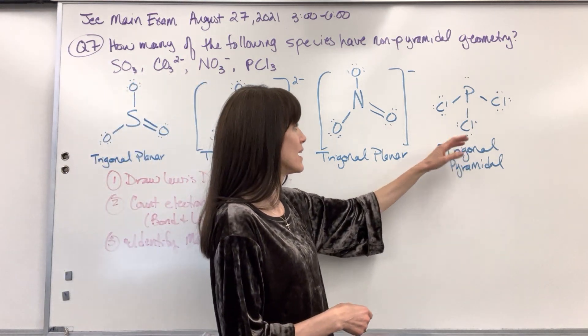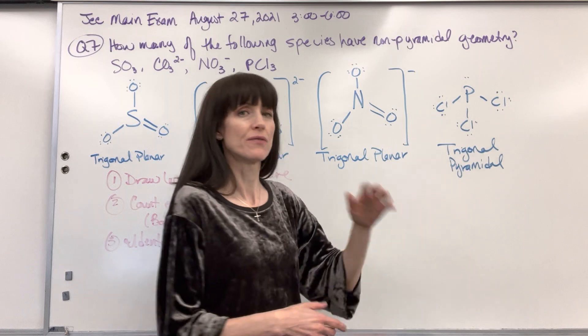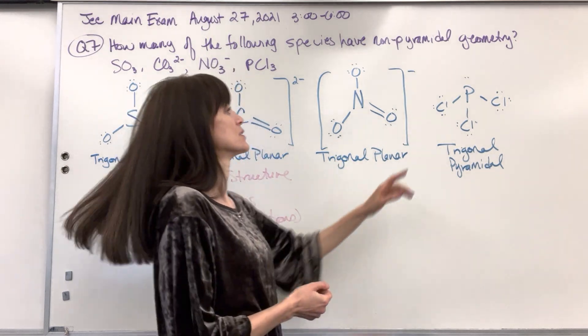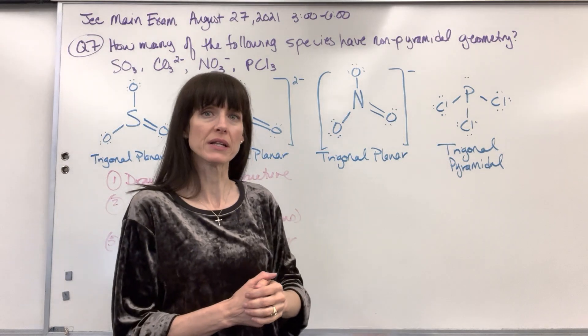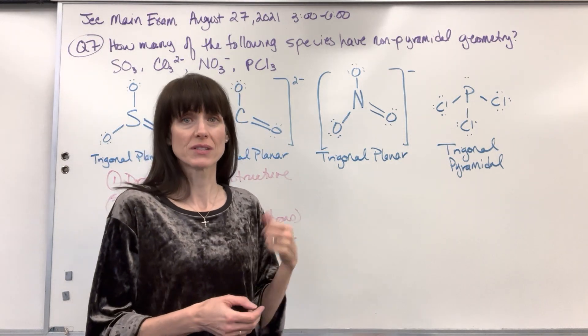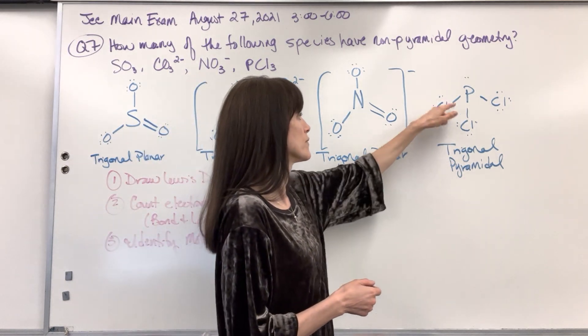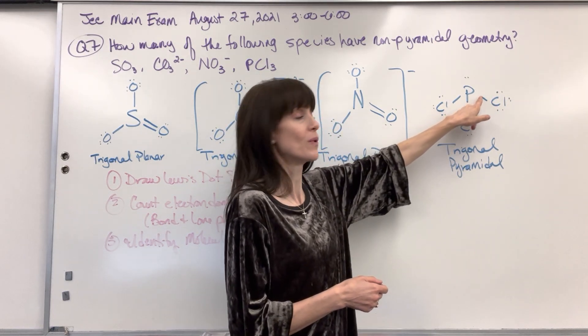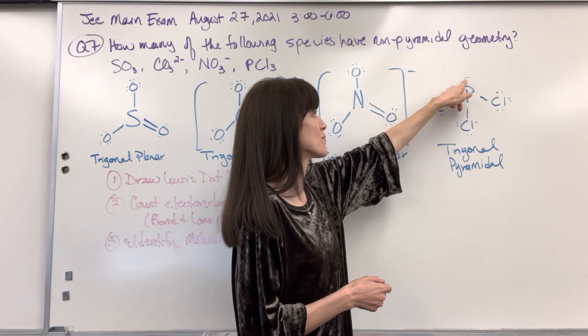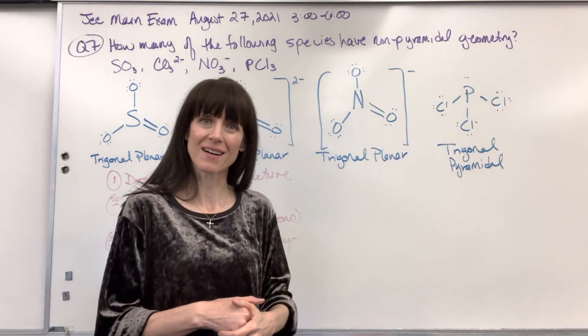Now let's look at our phosphorus trichloride. So phosphorus has five valence electrons. It's going to share one electron with each of the three chlorines. Chlorine has seven valence electrons. It shares one electron. So all the chlorines have a full octet of eight. And notice phosphorus shared one, two, three. So then it has four, five, a lone pair on top of it.